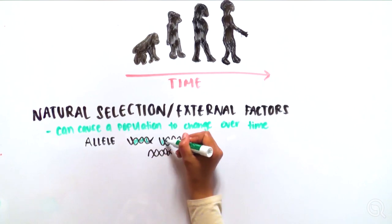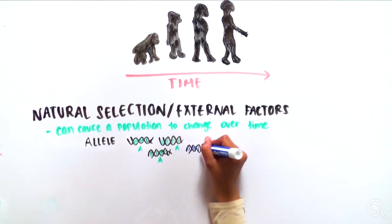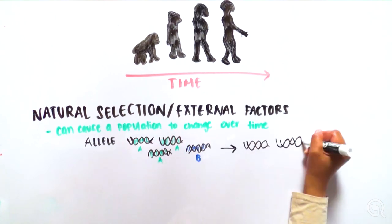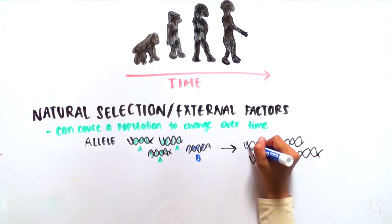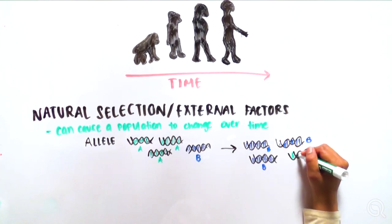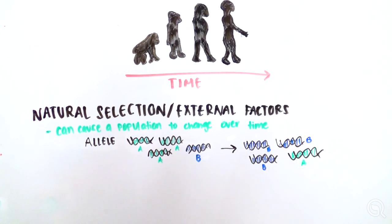One way for scientists to tell whether natural selection, which is the process of organisms adapting to the environment, or other external forces are causing a population to evolve, is determining the population's genetic structure if it were not changing.